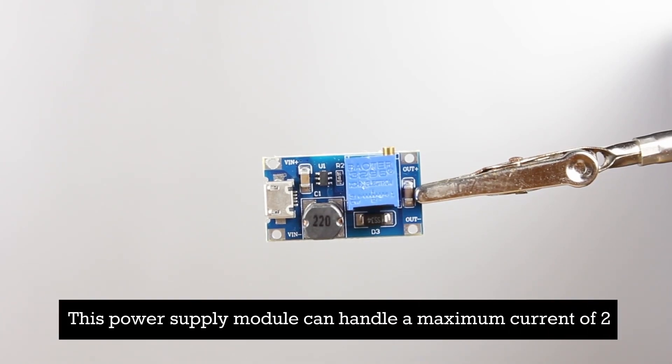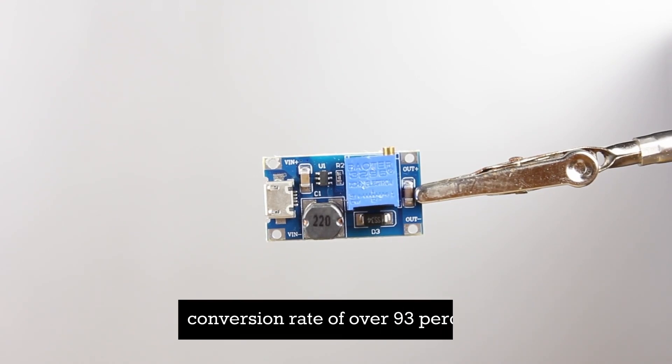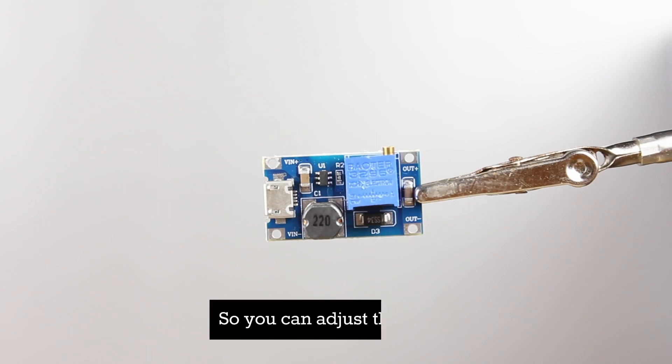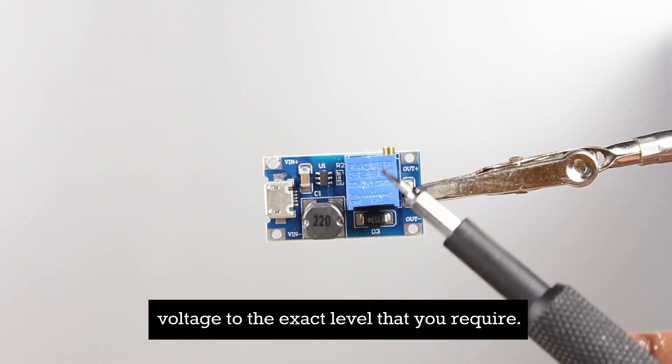This power supply module can handle a maximum current of 2 amps and boasts a highly efficient conversion rate of over 93%. It features a built-in potentiometer so you can adjust the output voltage to the exact level that you require.